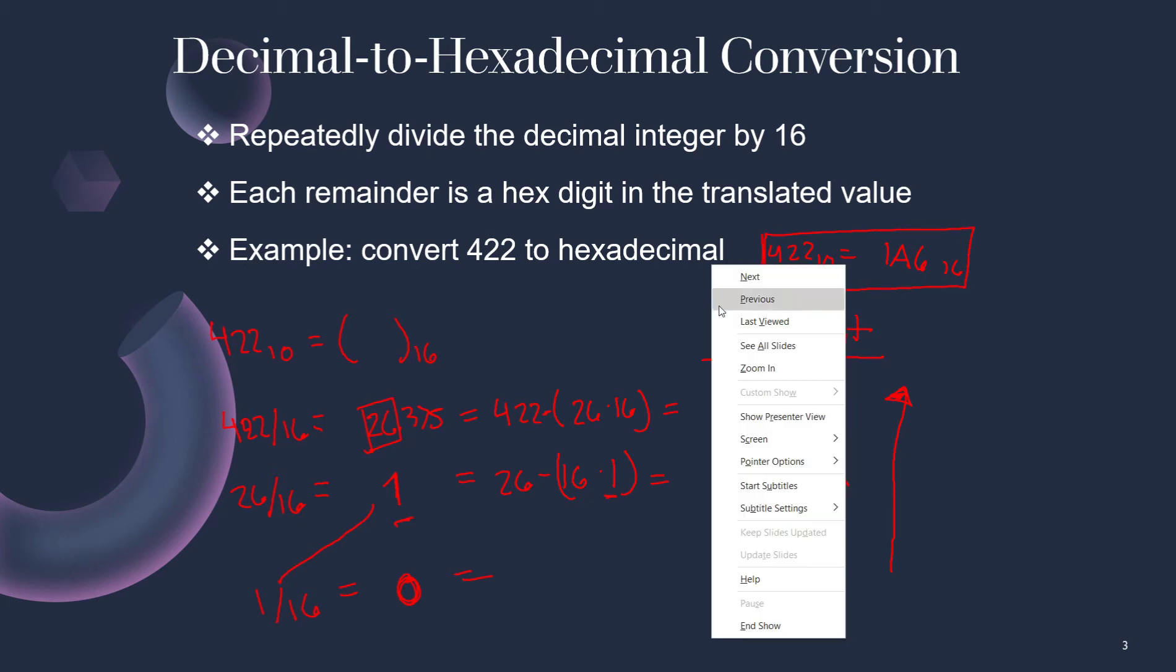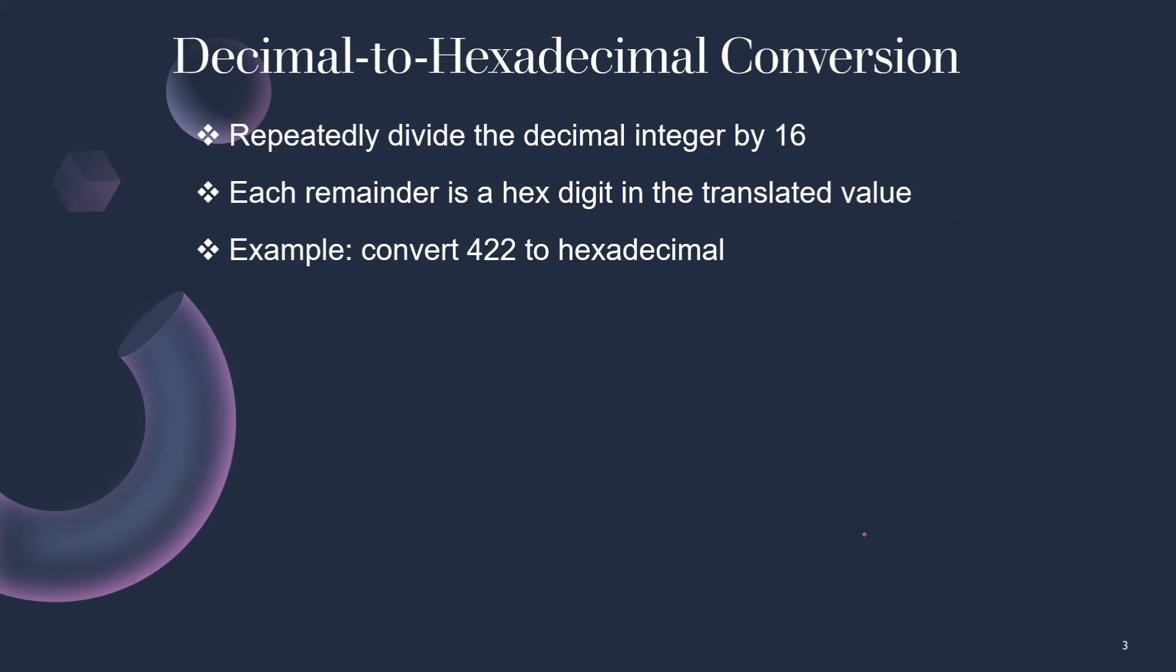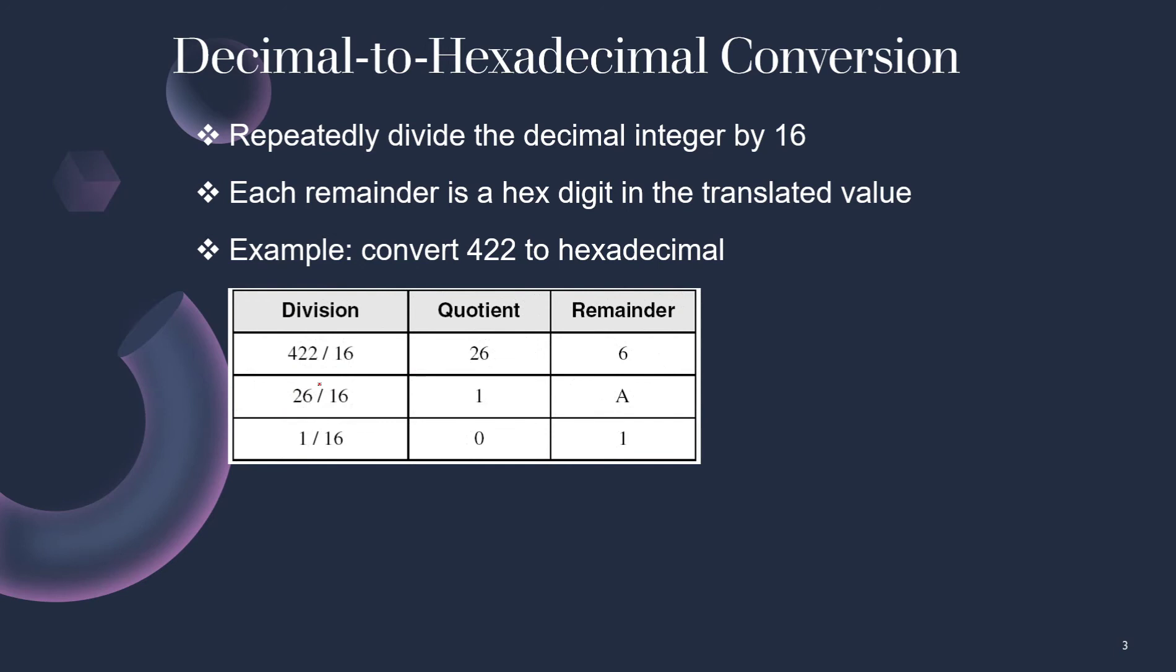Alright, so let's see what exactly we have. So as you can see, 422 divides 16, we're left with a quotient of 26 and a remainder of 6. We bring this 26, we divide it by 16. 16 only goes into 26 once. And the value is A, which is 10.